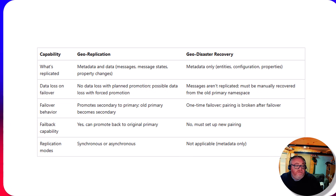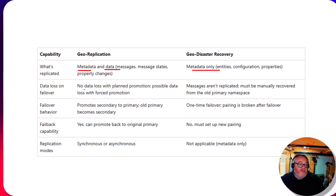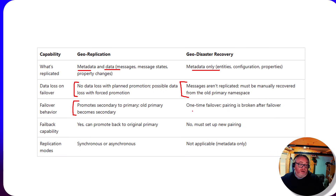Let's compare the differences between these options - this is a snapshot from the Microsoft documentation. The key point is what's replicated: both Geo DR and Geo Replication replicate metadata, but Geo Replication also replicates the actual messages, which is a huge difference for data loss. For failover, Geo Replication lets you flip backwards and forwards, whereas Geo DR is more of a one-time switch. Replication modes - async and sync - are only available in Geo Replication and aren't applicable in the Geo DR scenario.